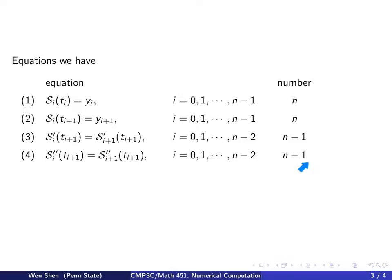Now let's do a count. How many equations do we have now? I have n, and I have n, and n minus 1, and n minus 1. So totally, I have 4n minus 2 equations already.